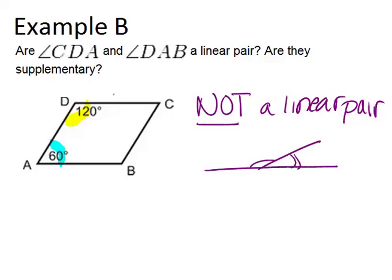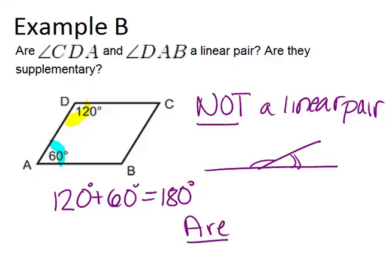In this case, that is not what we have. So even though these two angles do add up to 180 degrees, they're not a linear pair. But because they do add up to 180 degrees, they are supplementary. Because supplementary angles don't necessarily have to be on the same line, they just have to add up to 180 degrees. So while these angles are not a linear pair, they are supplementary.